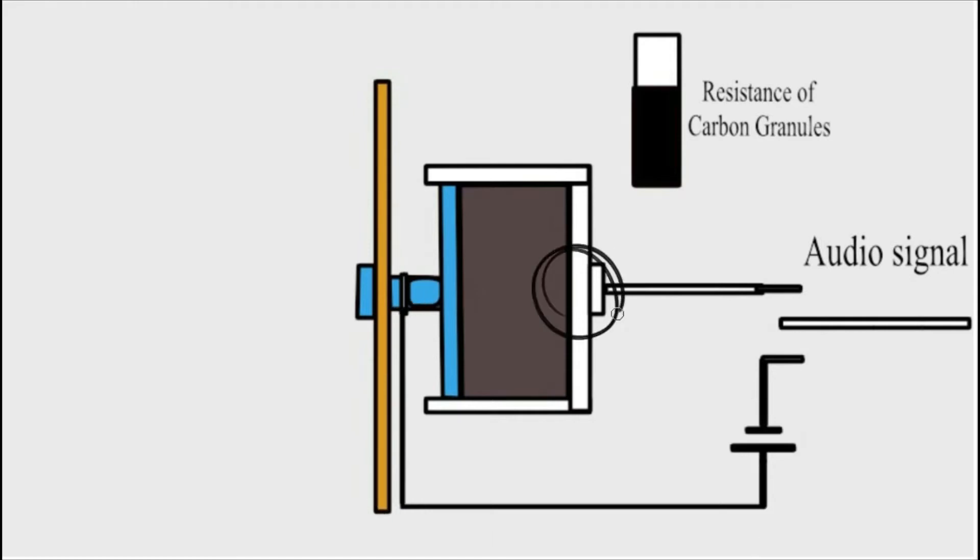And there's a wire connection that connects to the carbon granules over here. So, electricity flows through this side of the battery, through the metal plate, through the carbon granules, and then goes out of this side.